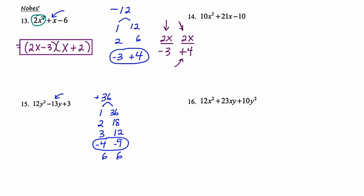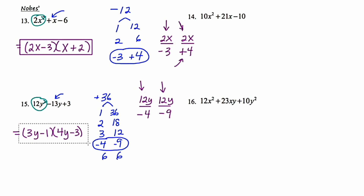Now it's time to set up my fractions. The denominators are the winning numbers I've circled: negative 4 and negative 9. The quadratic term is 12y squared, and I drop the squared, so my numerators are 12y and 12y. Reading the fractions downward and reducing: the first fraction, 12y over negative 4, divides top and bottom by 4 to give 3y minus 1. The second fraction, 12y over negative 9, divides top and bottom by 3 to give 4y minus 3. Consider FOILing to check.